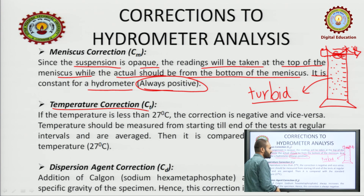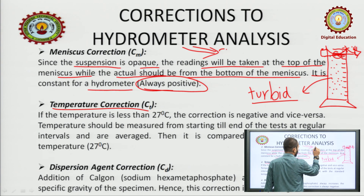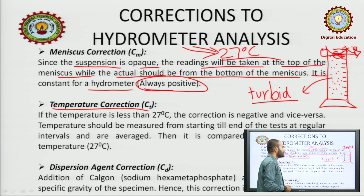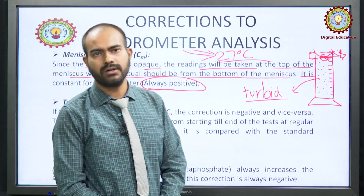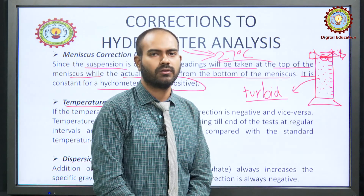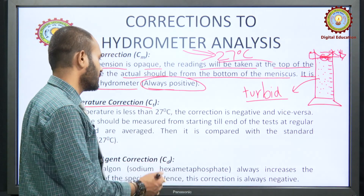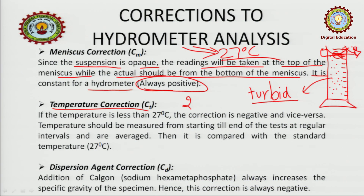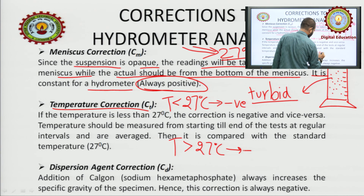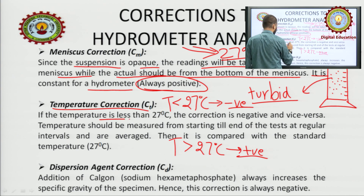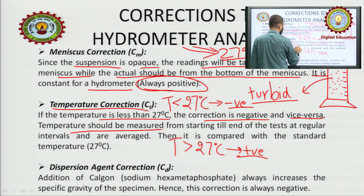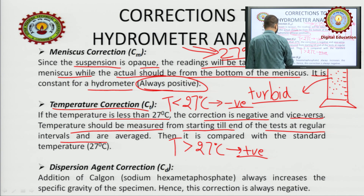Now, what is temperature correction? These analyses or experiments are carried out at the standard temperature of 27 degrees centigrade, but the actual temperature may be higher or lower. So we have to provide a temperature correction. If temperature T is less than 27°C, a negative correction is applied; if temperature is greater than 27°C, a positive correction is applied. Temperature should be measured from start to end of the test at regular intervals and then averaged, and compared with the standard temperature of 27°C.